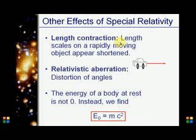So length contraction: length scales on rapidly moving objects appear shortened. And this appears for the person in the vehicle moving.